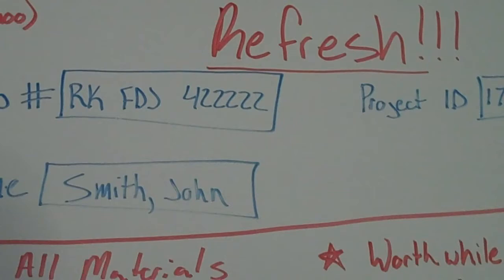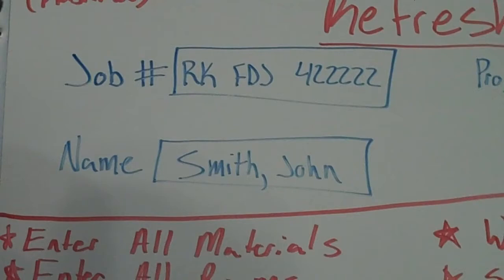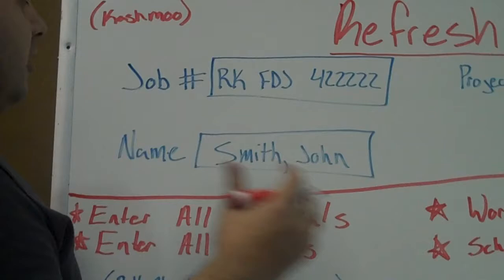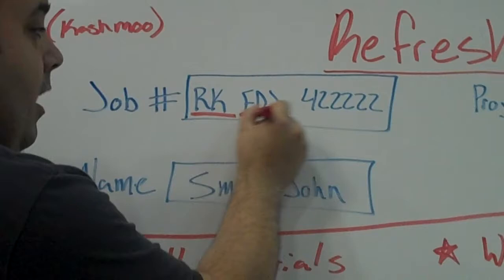So first things first, when scheduling in Cashmoo, the biggest thing I wanted to review is what we're putting in these three boxes. I think it's important that all three stores in Sacramento — because we share one Cashmoo — be doing it the exact same way. Having discussed this with Steve, Bill, and Wayne, here's what we think should be done. Under the job number box, you should list your store. For me it would be RK, then your name — rather than writing Fernando, I just write FDJ, my initials — and your job number.